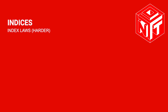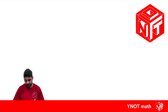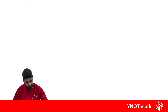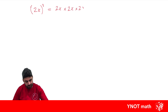Index laws — harder. Here we're going to look at a few more index laws. Let's have a look at (2x) all cubed. Well, this just means 2x times 2x times 2x.